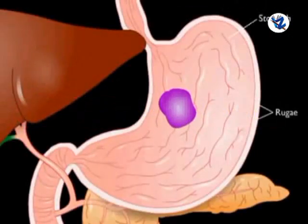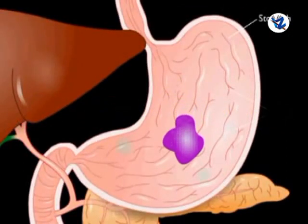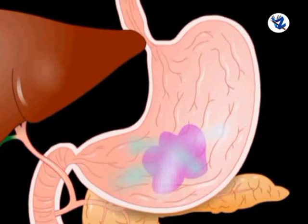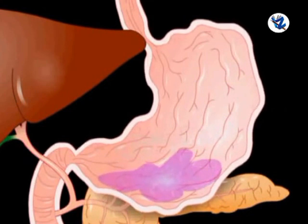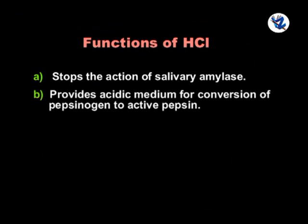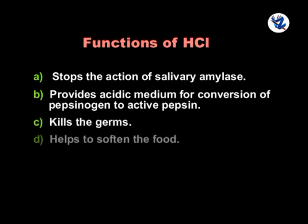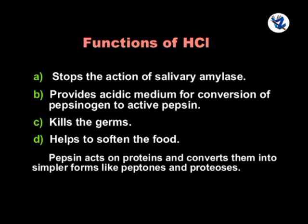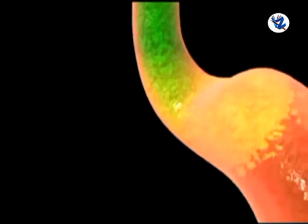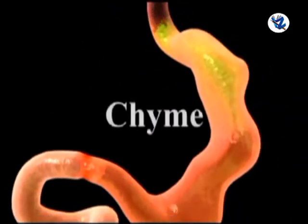Then digestion in the stomach — as soon as food enters the stomach, the gastric glands start producing gastric juice. Gastric juice contains dilute hydrochloric acid, mucus and the inactive protein-digesting enzyme pepsinogen. The functions of HCl: stops the action of salivary amylase, provides acidic medium for conversion of pepsinogen to active pepsin, kills germs and helps to soften the food. Pepsin acts on proteins and converts them into simpler forms like peptones and proteose. After digestion in the stomach, food is converted into a semi-solid mass called chyme.